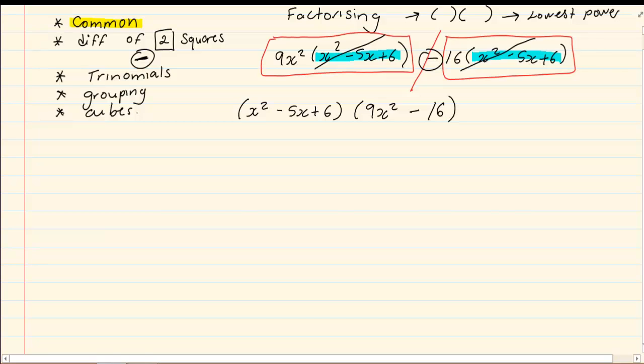Now, we have made the brackets. But, is it at the lowest power? Can we go further? If you look at x squared minus 5x plus 6, it is a trinomial. How do I factorize a trinomial? When we are doing trinomials, we said first, we look at the last sign in the term.